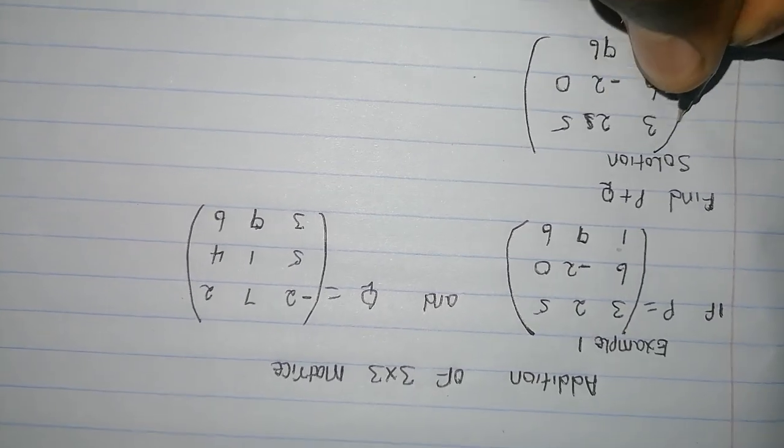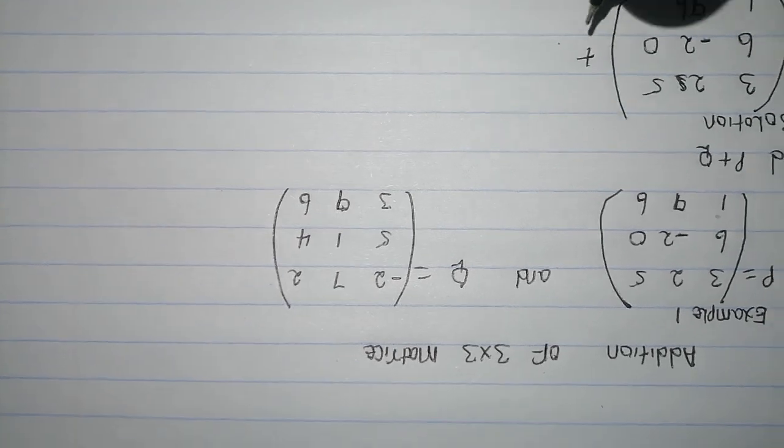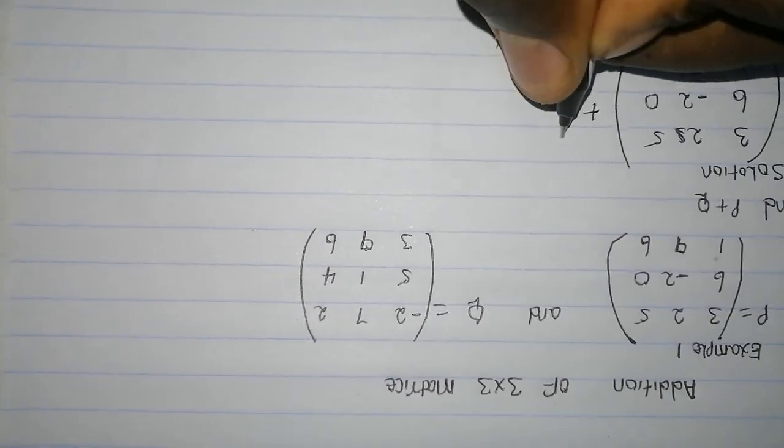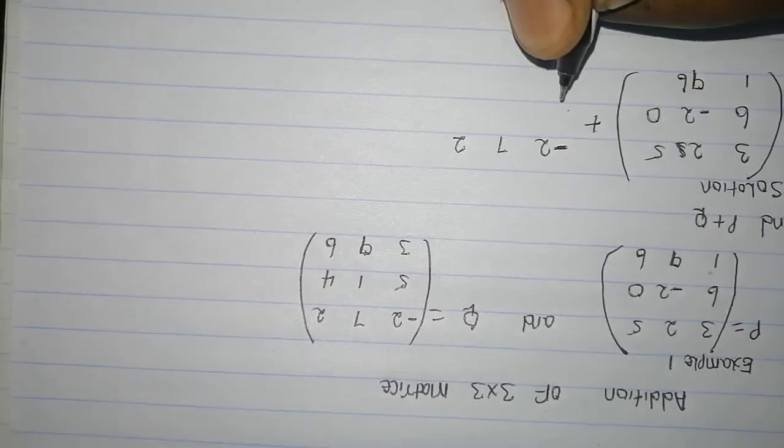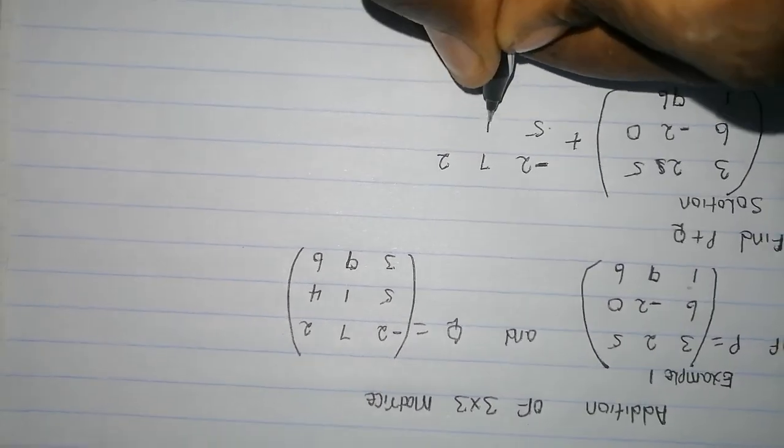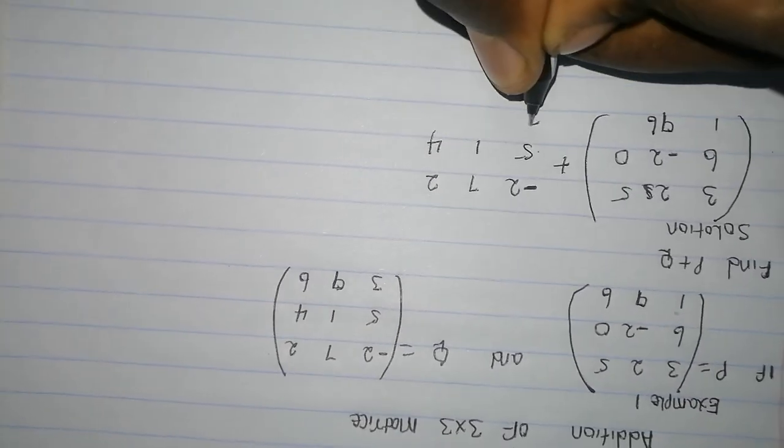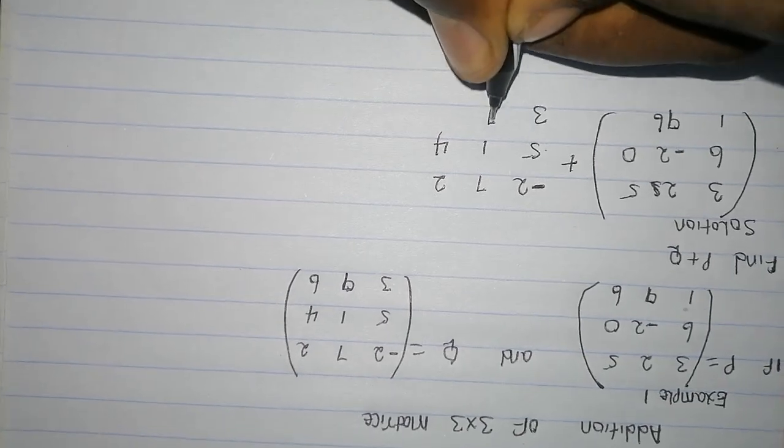then you add to Q, which is negative 2, 7, 2, 5, 1, 4, 3, 9, 6.